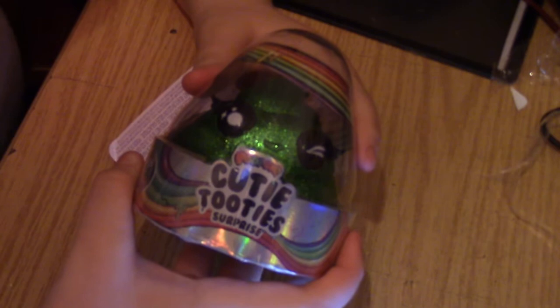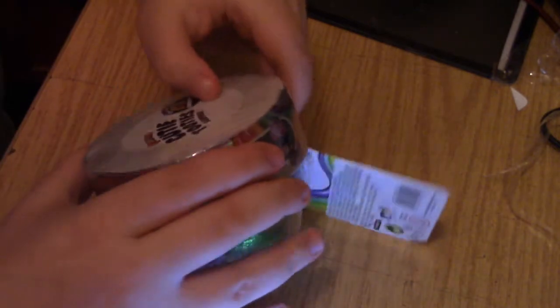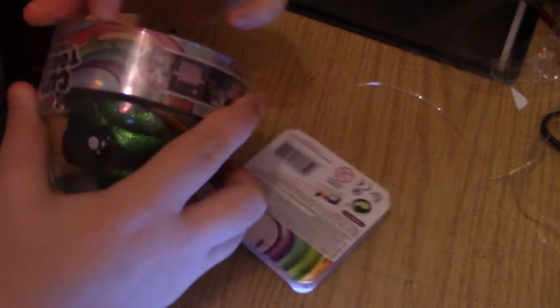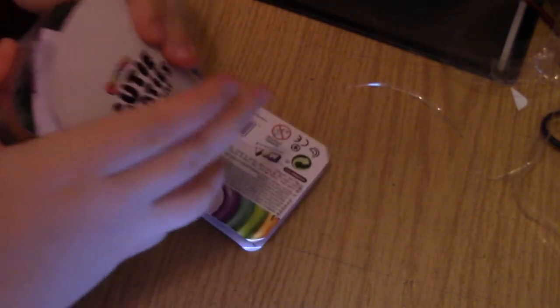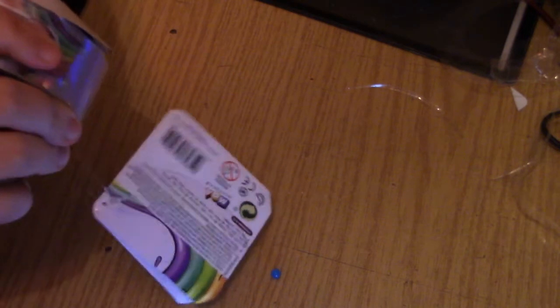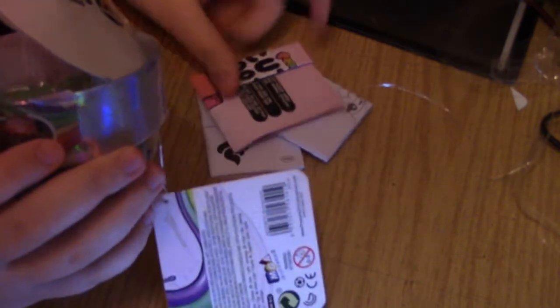So the next one we've got is QE2E surprise. It is basically a poop. Let's open it. I got a green one, don't know why I got a green one, it was just the first one I saw so I picked it up. So this one was five pounds, better be worth it. Okay, let's read this first.